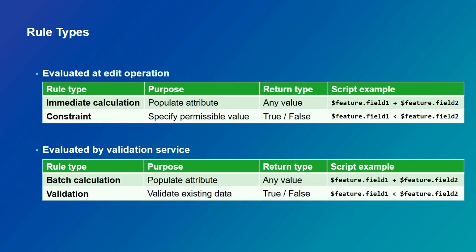The constraint rule specifies permissible attribute configurations — the script should return true or false, like 'field one should be less than field two.' The other two rule types are evaluated by the validation service: batch calculation rules and validation rules. The batch calculation rule is essentially similar to immediate calculation but evaluated in batch mode, where a bunch of rules are evaluated together. The validation rule is the counterpart of the constraint rule but also evaluated in batch mode.